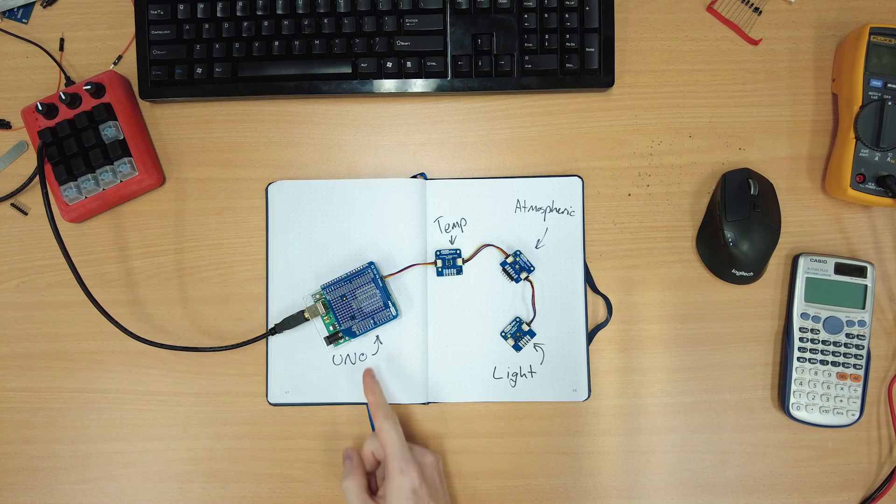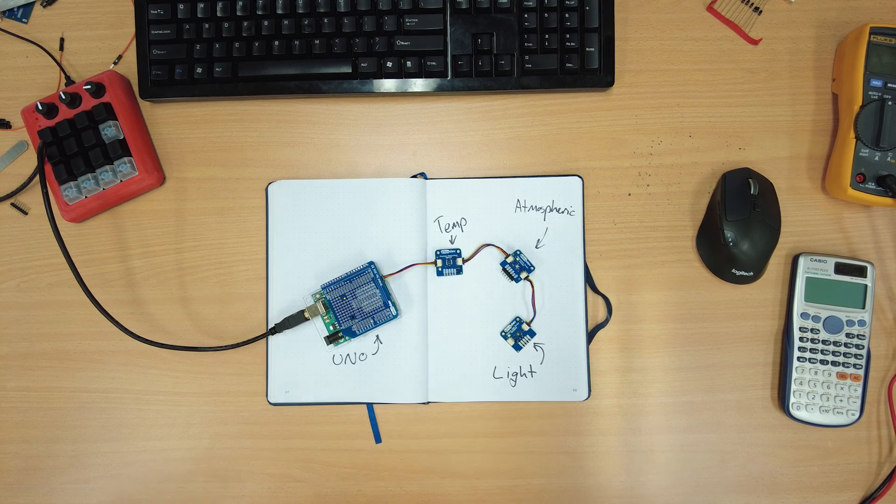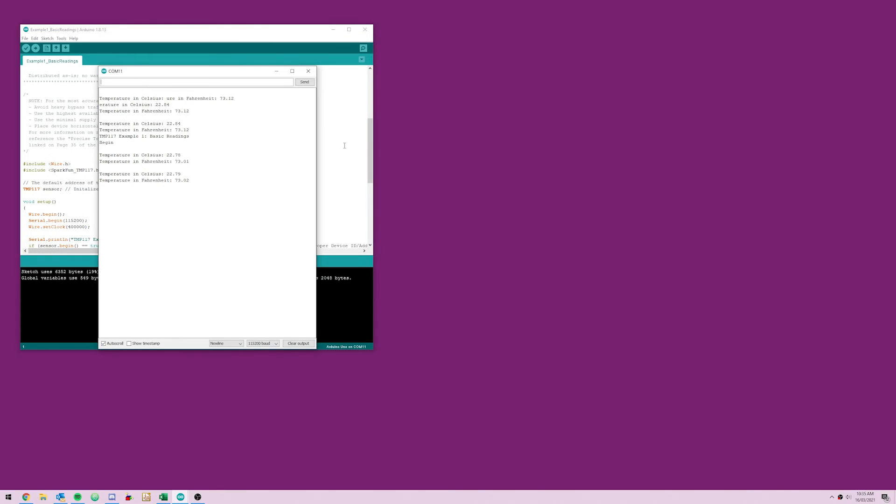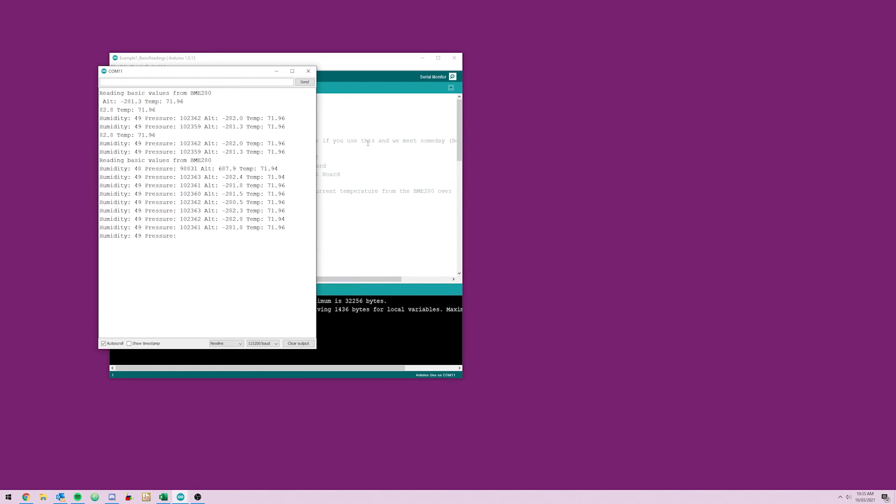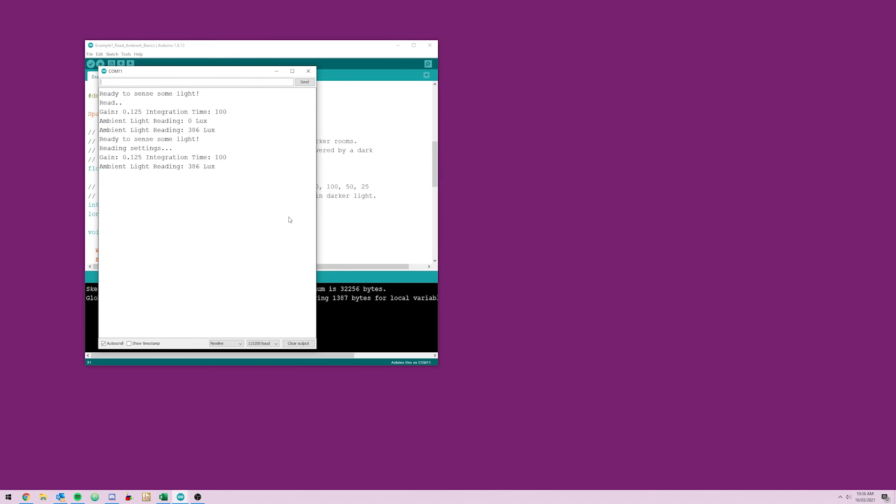To test the shield I just connected all the unique PicoDev modules together, plugged them into the shield and ran a test script for each, just to check that that logic level converter is working with no problems. And we get some data streaming out for each type of measurement. We have temperature, the temperature humidity and pressure from the atmospheric sensor, and the light levels from the light sensor. Beauty.